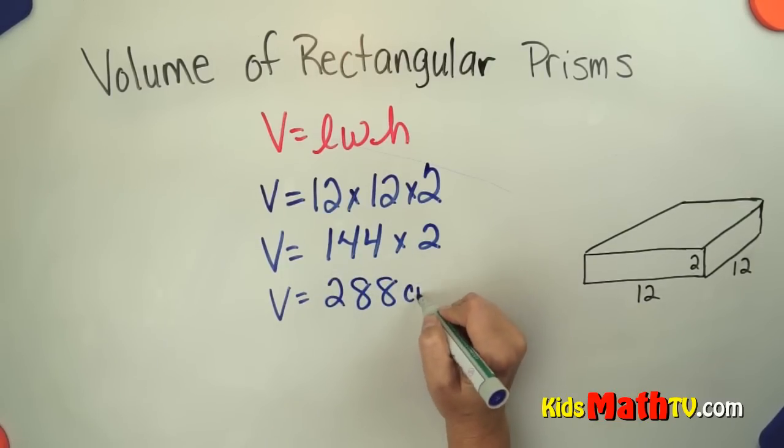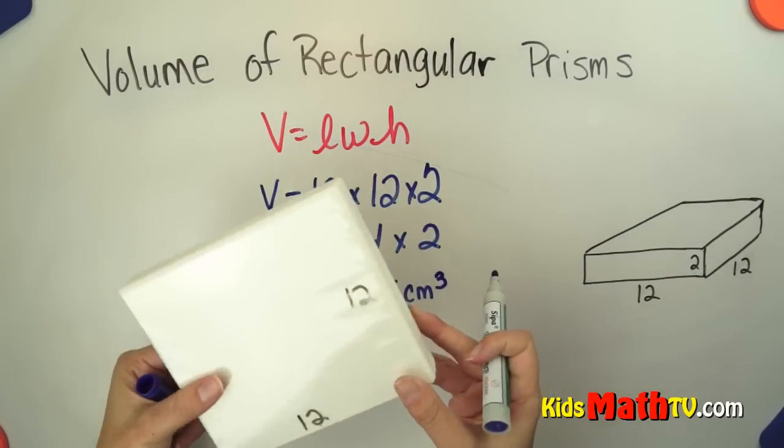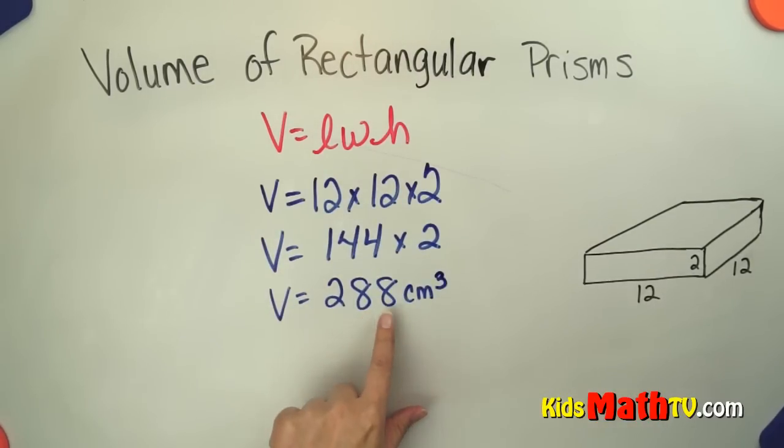And I said that these were centimeters. And this time we're doing cubed. So we have cubic centimeters or centimeters cubed. So in this box, this actual box, we could fit 288 cubic centimeters or 1 by 1 by 1 centimeters.